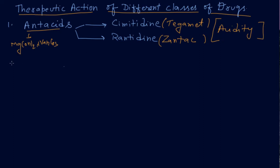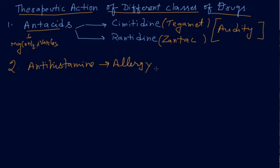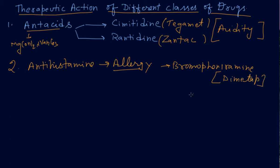The second class related to antacids is antihistamines. Antihistamines are used to control allergy. Allergy occurs because histamine is a potent vasodilator. To control allergy, we use synthetic drugs such as bromophenamine, commonly known as Dimetapp.